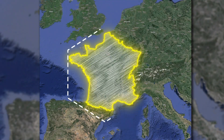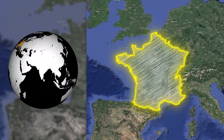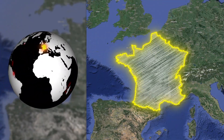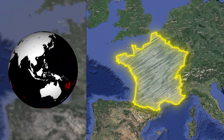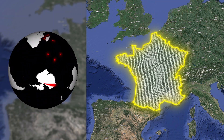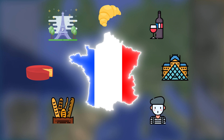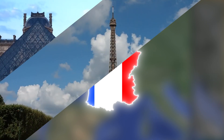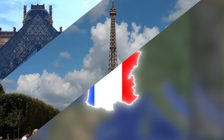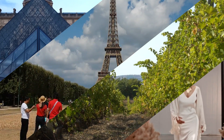France, roughly a hexagon-shaped country, is located in Western Europe and has a presence in almost all the continents of the world through its overseas territories. France is often referred to as the cultural center of Europe, renowned for its art museums, architectural attractions, scenic vineyards, fashion shows, and much more.